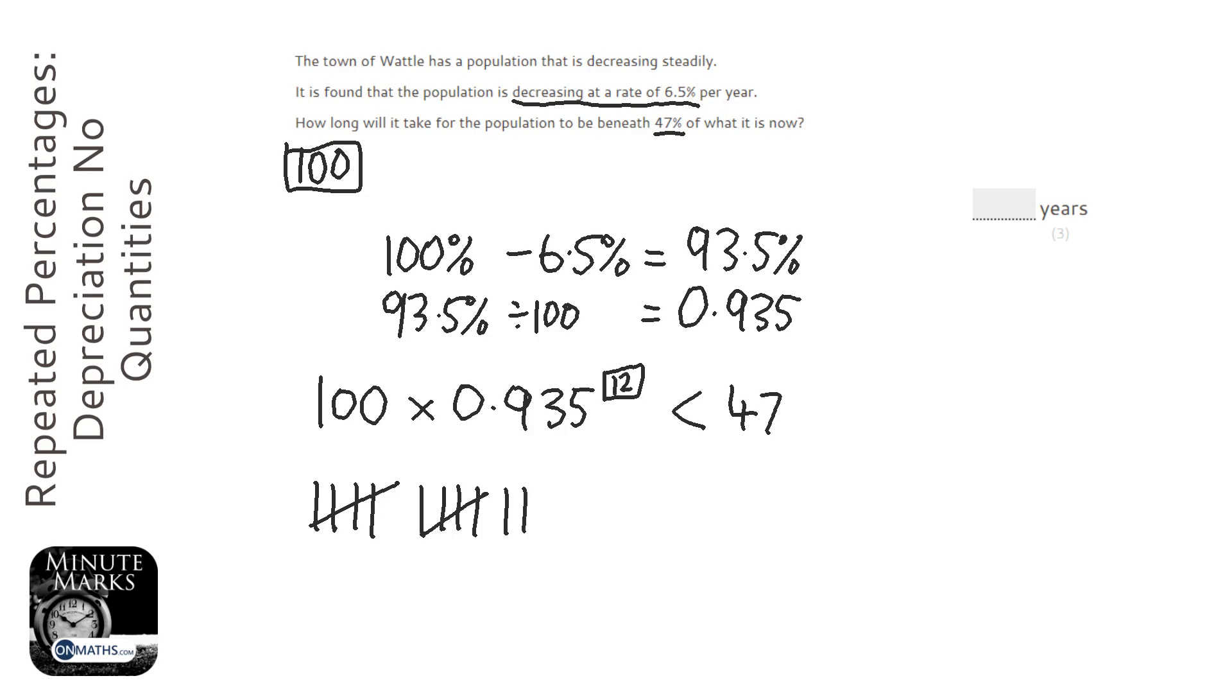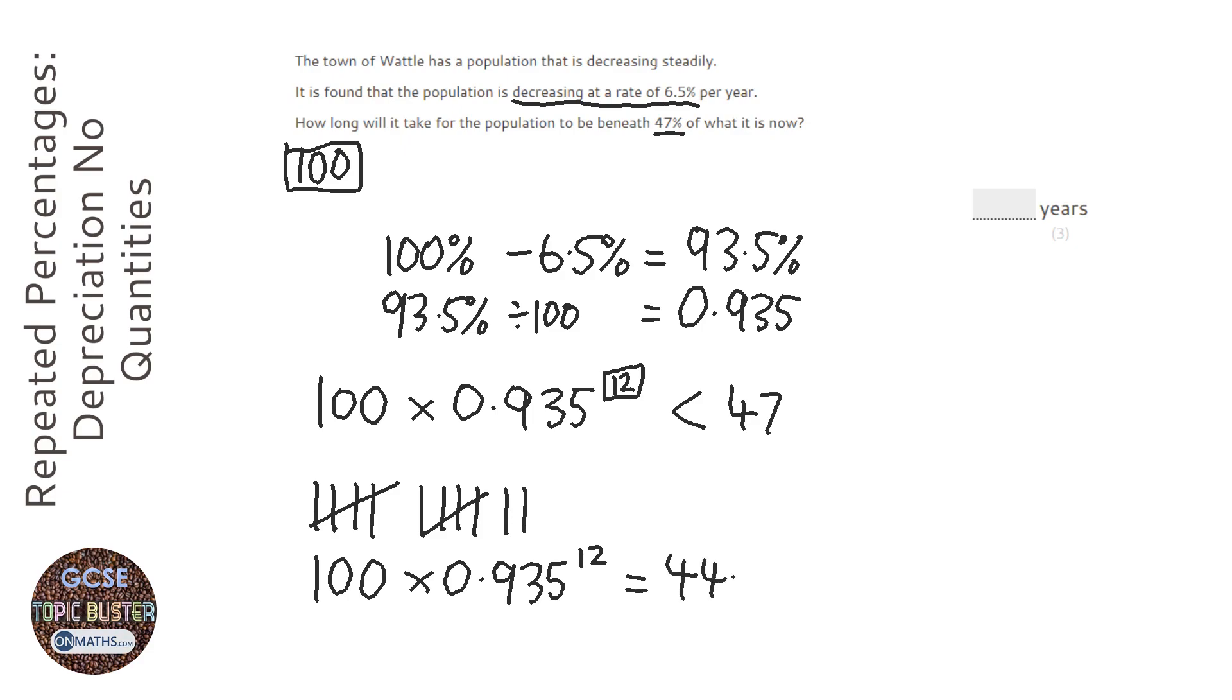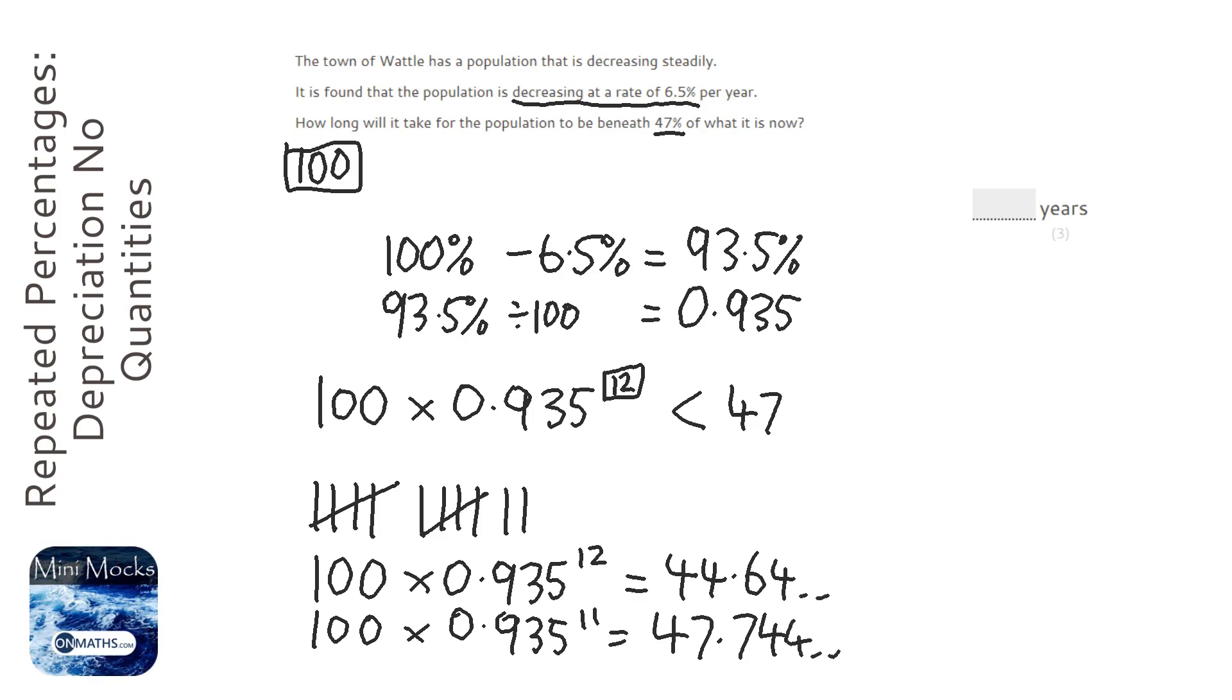So in total, I've done it 12 times. Now, I'll always want to check that because my counting is not necessarily the best when under pressure. So what I'm going to do is I'm just going to do 100 times 0.935 to the power of 12 to check that I've got this right. So 100 times 0.935 to the power of 12, and I get 44.64. And I'm just going to check that that was the first time it went under. So I'm going to do to the power of 11, and I can just scroll through my working out in the calculator and change the 12 to 11, and press equal, and that's 47.744.